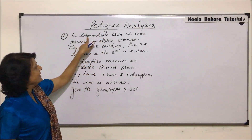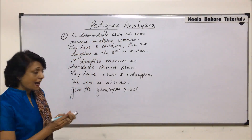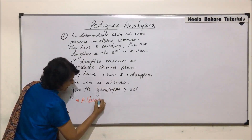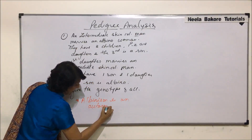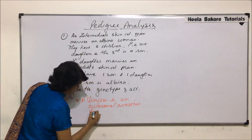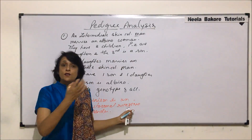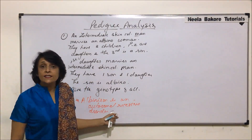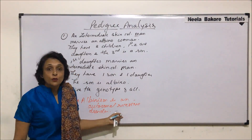The question starts with an intermediate skin-colored man marrying an albino woman. The things we have to remember here is that albinism is an autosomal recessive disorder. Plus, when we were discussing polygenic inheritance, we said that skin color is decided by or controlled by three genes.